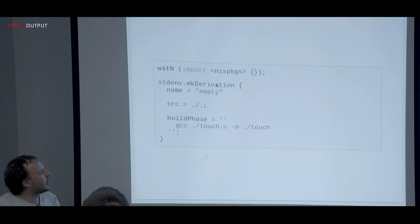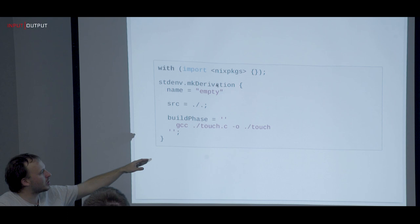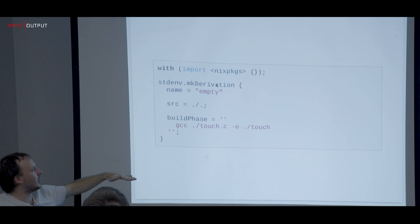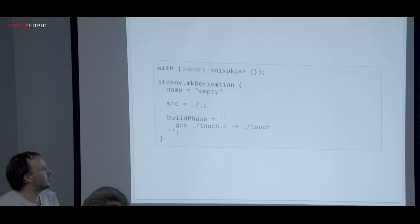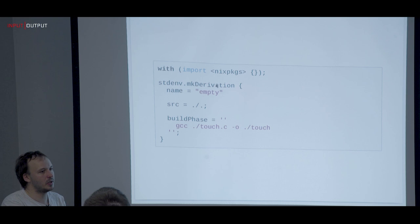The main derivation accepts higher-level attributes like where the source is and build phases. The way this works is through a long bash file that executes bash functions — these build phases are bash functions inlined into the builder bash process. Of course, nothing stops you from using Haskell as a builder, passing it in — all these attributes are passed as arguments to the builder on the command line.